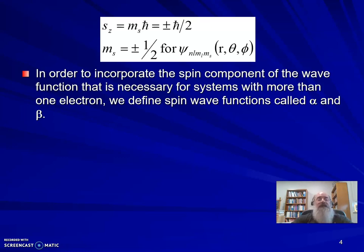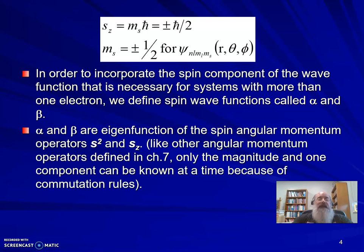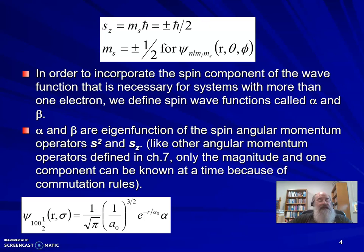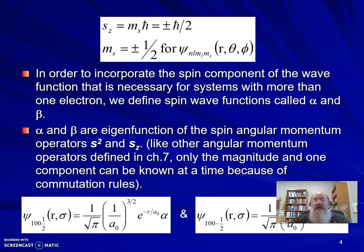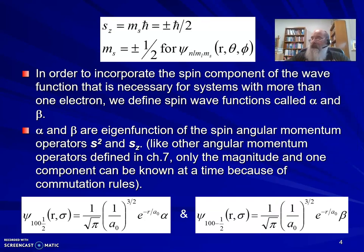In order to incorporate the spin component of the wave function, it's necessary for systems with more than one electron that we define spin wave functions. We're just for now going to call those alpha and beta. We're not going to write the functions themselves all the way out. Alpha and beta are eigenfunctions of the spin angular momentum operators s² and s_z, just like other angular momentum operators defined in chapter 7, except for the magnitude. Only the magnitude and one component can be known at the same time because of commutation rules.